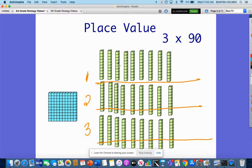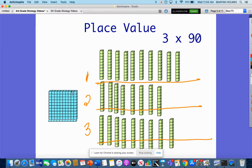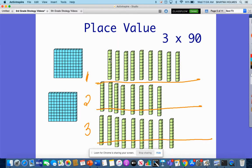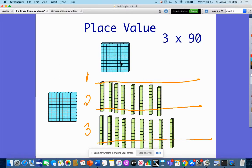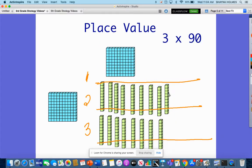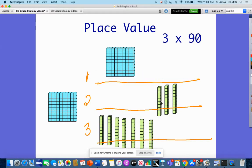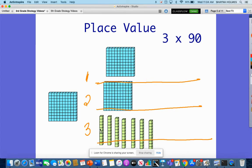So we have 3 sets of 90. What I'm going to do is I'm going to make these into hundreds. So if I have 9 tens, I just need one more to make this a hundred. So now I can delete these because I have 100 now. Now I only have 8 here, but if I move 2, I will have 10. I can delete these and replace it with 100.